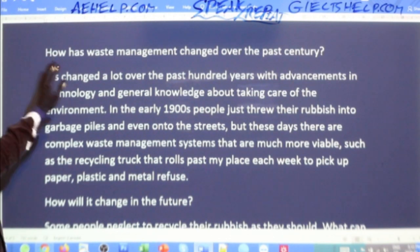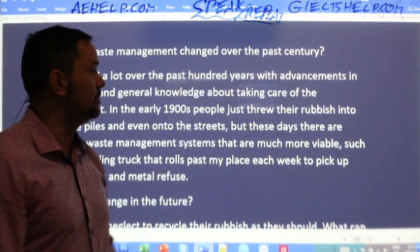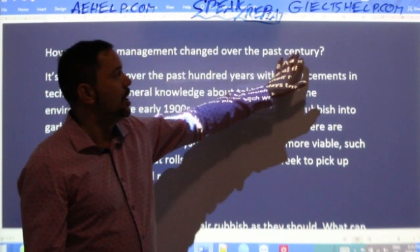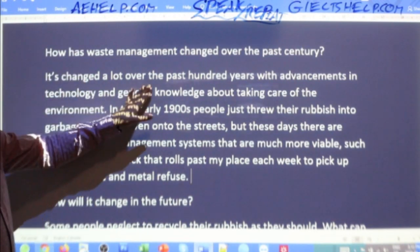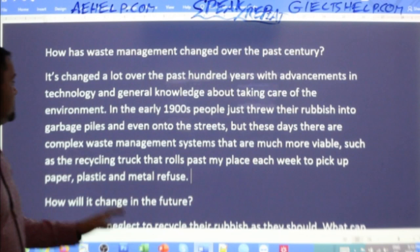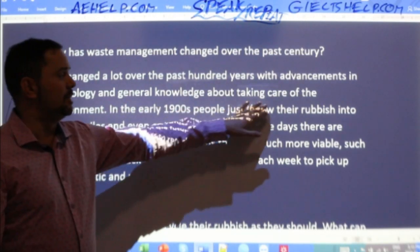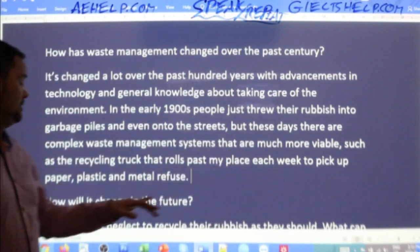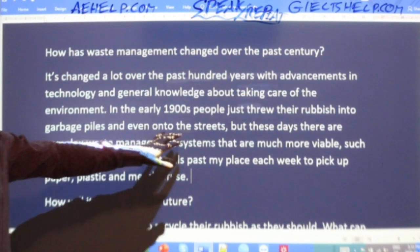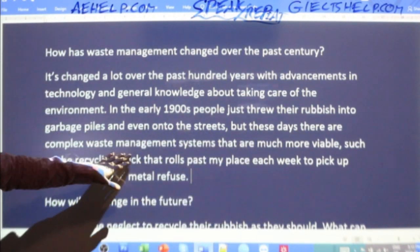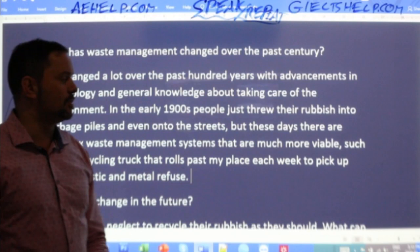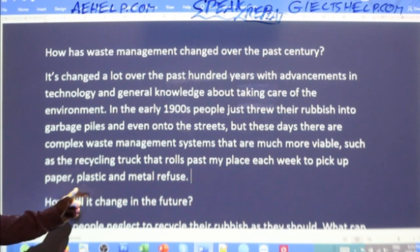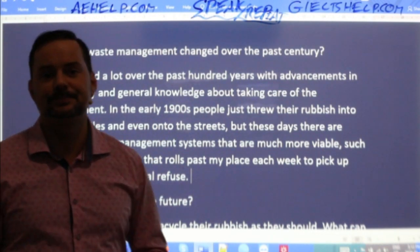Repeat after me: 'How has waste management changed over the past century? It's changed a lot over the past hundred years with advancements in technology and general knowledge about taking care of the environment. In the early 1900s, people just threw their rubbish into garbage piles and even onto the streets. But these days, there are complex waste management systems that are much more viable, such as the recycling truck that rolls past my place each week to pick up paper, plastic, and metal refuse.' That's your band 9 expert English user response.